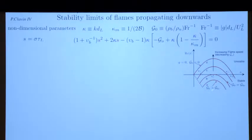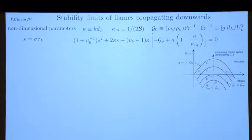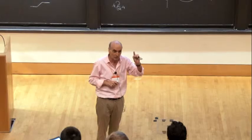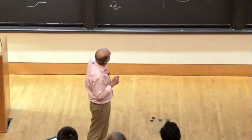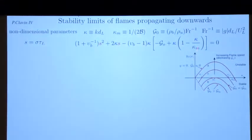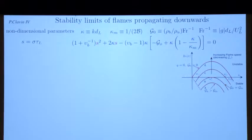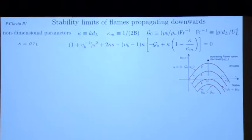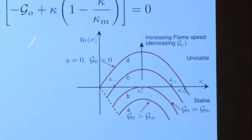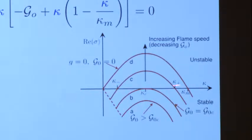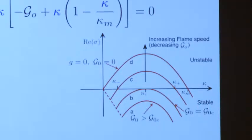This acceleration stabilizes the long wavelengths; the diffusive term — kappa-squared or k-squared — stabilizes the short wavelengths, i.e., large k. So when g is sufficiently large, the flame is stable whatever the wavelength. Then I decrease g. If g equals zero, I am back to the Darrieus-Landau analysis plus the diffusion term. And this g is proportional to the inverse of the square of the flame velocity. So decreasing g means increasing the flame velocity.